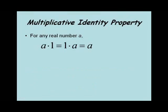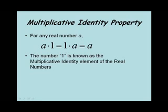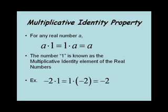Now let's look at the multiplicative identity property. This says for any real number a, a times 1 equals 1 times a, which equals a. The number 1 is the multiplicative identity element of the set of real numbers. As an example, negative 2 times 1 equals 1 times negative 2, which equals negative 2.